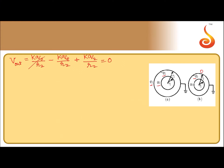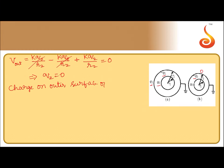The first two terms cancel each other. So we get k·q₂/r₂ = 0, which implies q₂ = 0. Therefore, the charge on the outer surface of the outer shell is zero. This is the answer for part (a).